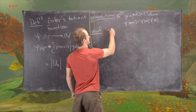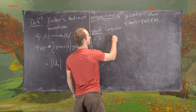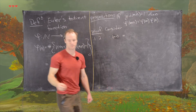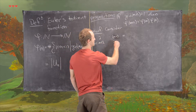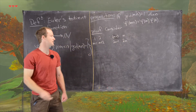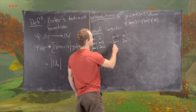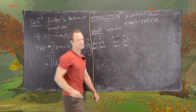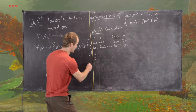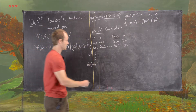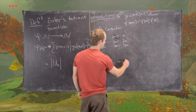We write the numbers from 1 to mn in rows of length m. The first row is 1, 2, ..., m−1, m. The second row is m+1, m+2, ..., 2m−1, 2m. Continuing down, the last row is (n−1)m+1, (n−1)m+2, ..., nm−1, nm.